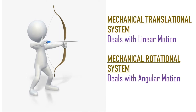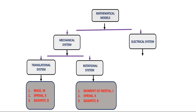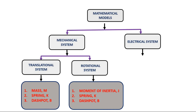If a system deals with linear motion, it is a mechanical translational system. If a system deals with angular motion, it is a mechanical rotational system. For example, the movement of a bike is a linear motion — if the bike is traveling a distance, that is linear motion. This linear motion is produced by the rotation of the wheel, which is called angular motion.